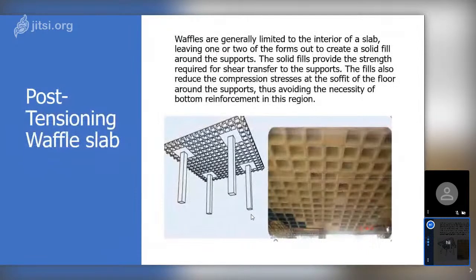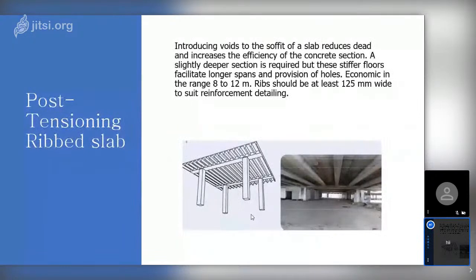The next type is the Waffle Slab. Generally, we won't use it — only wherever there is a requirement for internal and aesthetic purposes. With Waffle Slab, we can avoid bottom reinforcement in certain regions. The Rib Slab is introduced where we need to reduce slab dead load and increase efficiency of the concrete section. Wherever a deeper section of beams is required, we use the Rib Slab method — beams at equal distances distribute the load while providing clear height for service loads.